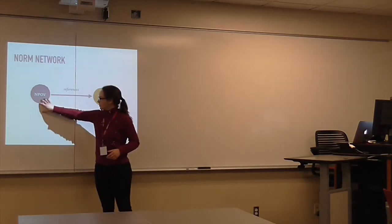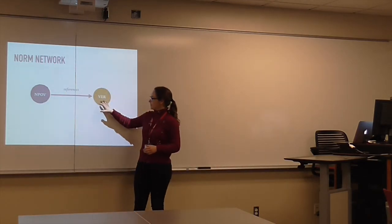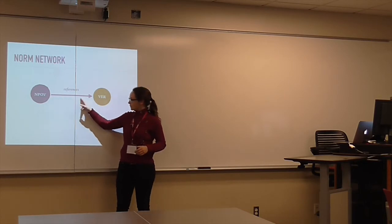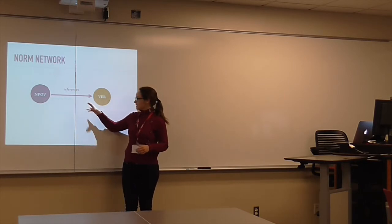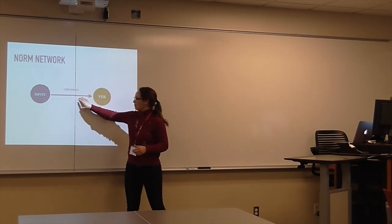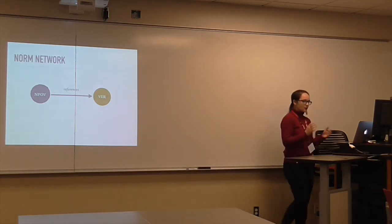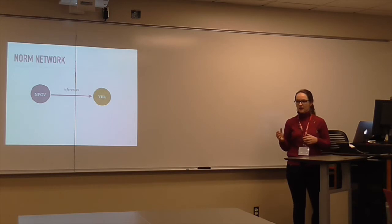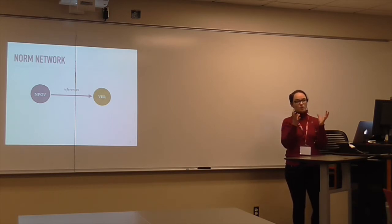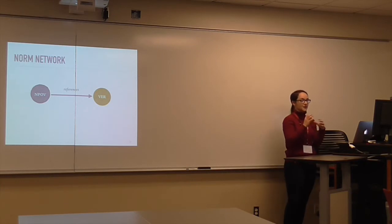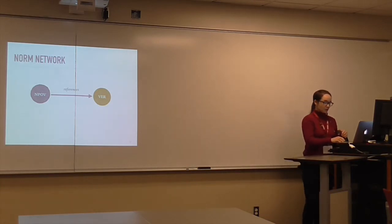You have neutral point of view, which references verifiability, and in doing so creates a directed edge between the two, so it's pointing to it in the larger network. This network perspective is really helpful because it allows us to quantify the norms, to understand both the global structure and also the ways that they connect to each other locally and influence each other. We'll use it for the rest of this analysis to understand the local and global structure of the norm system.